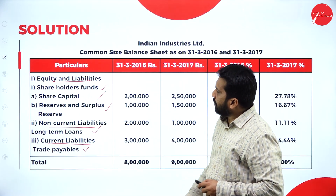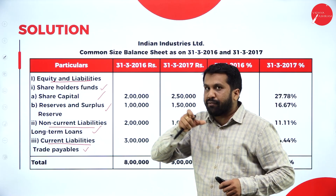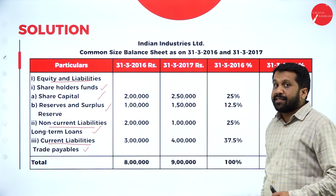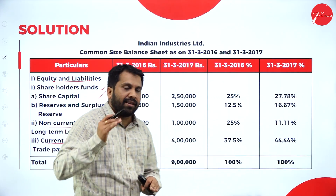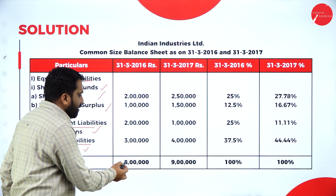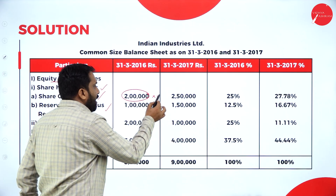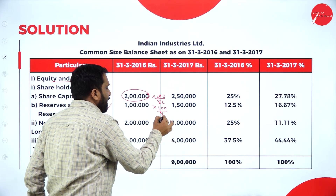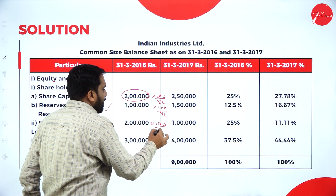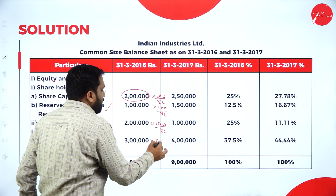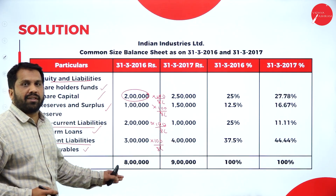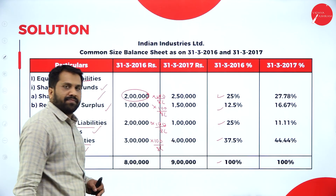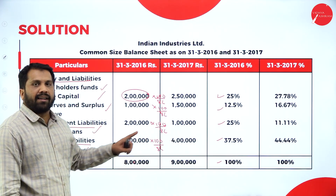See how the question is given and how your answer should be. They have done bifurcation. Write all the information for 2016 and 2017. Once written, don't compare — you have to see the total. Total is 8 lakh. Now: 2 lakh into 100 divided by 8 lakh; 1 lakh into 100 divided by 8 lakh; 2 lakh into 100 divided by 8 lakh; 3 lakh into 100 divided by 8 lakh. If you do all this calculation, you will have your answer. The total is always 100%.